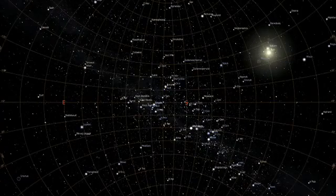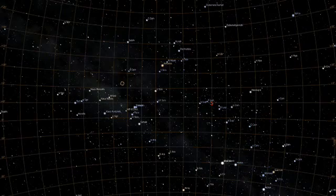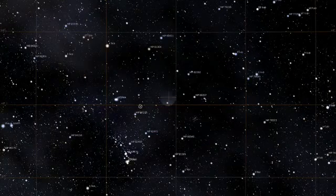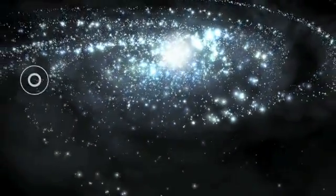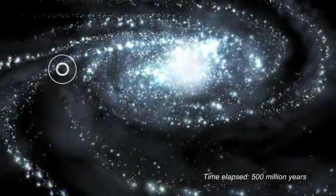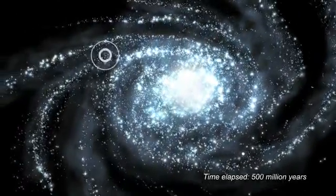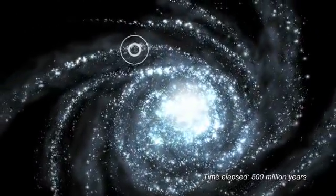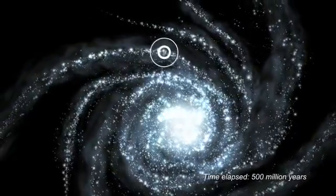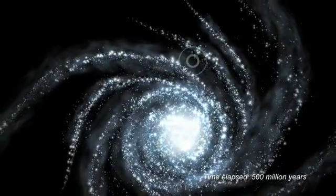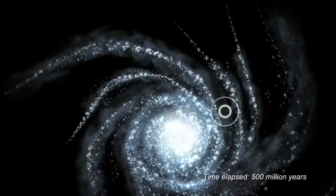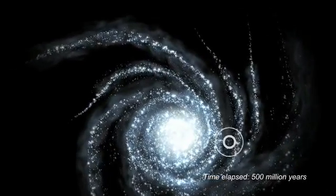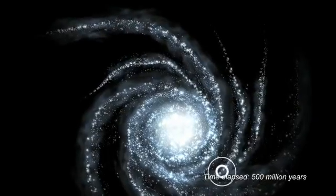Catalogues of star positions are routinely used to point ground-based telescopes, navigate space missions, and drive planetaria. Information from Hipparcos has enabled astronomers to trace the Sun's passage through the galaxy back in time. This has shown that over the last 500 million years, the Sun has passed through four of the Milky Way's spiral arms.